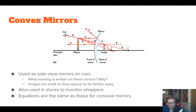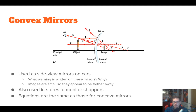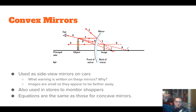Convex mirrors are used for side-view mirrors on cars — that's why they say 'objects in mirror are smaller than they appear.' They give a wider angle of view, which is helpful, but objects look farther away than they actually are. They're also used in stores to monitor shoppers — look up at the ceiling at the end of a row in a Walgreens and you'll likely see a big silver convex mirror so employees can see who's in each aisle.